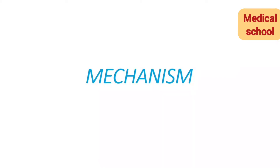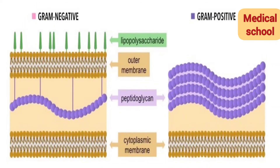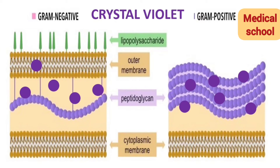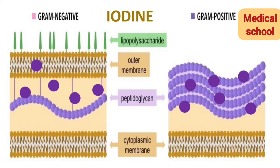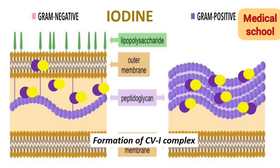Now let's start with the mechanism. Left side wala gram negative cell wall hai, and right wala gram positive. Crystal violet add karne ke baad, crystal violet cell mein enter karega. Agar aap microscope mein dekhenge toh both cells — gram negative and gram positive — will appear violet. Fir hum iodine add karte hai. Iodine crystal violet ke saath complex form karega — this complex is called CVI complex. Iodine ka function ye hota hai ki wo stain ko fix karta hai, so it cannot be removed easily.